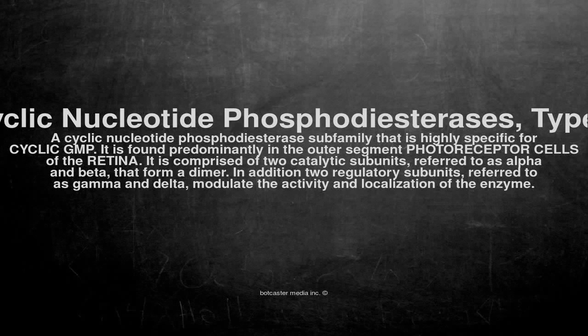Cyclic Nucleotide Phosphodiesterases, Type 6: a Cyclic Nucleotide Phosphodiesterase subfamily that is highly specific for cyclic GMP. It is found predominantly in the outer segment photoreceptor cells of the retina.